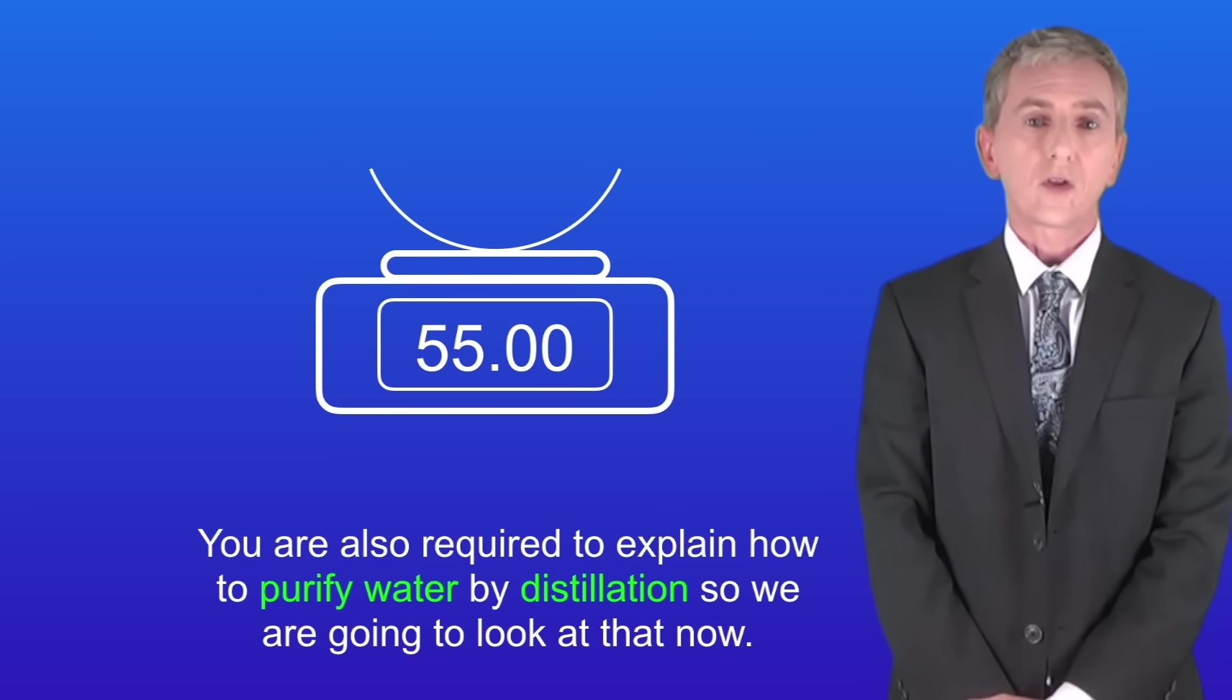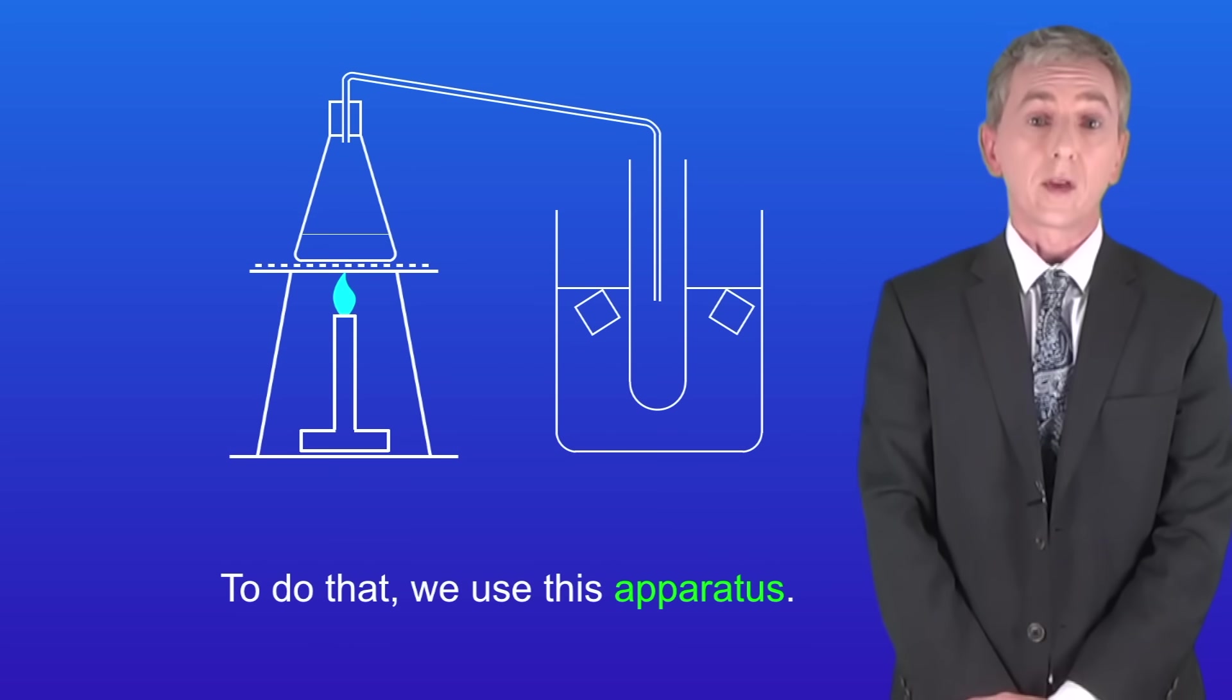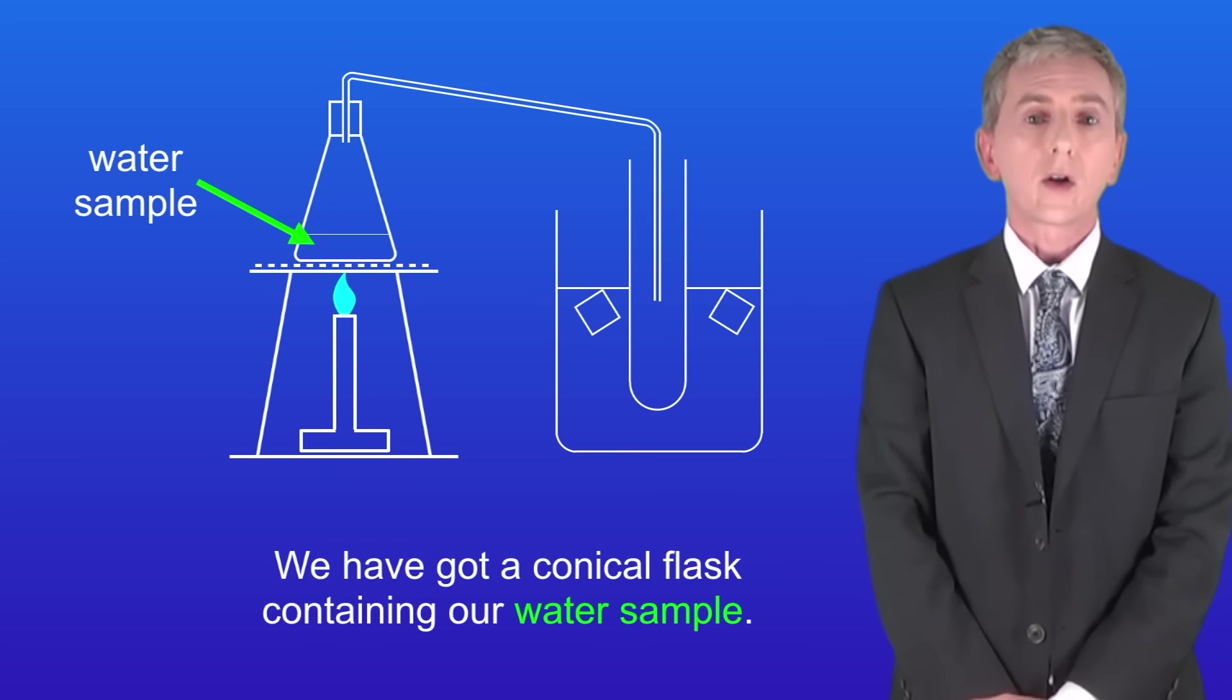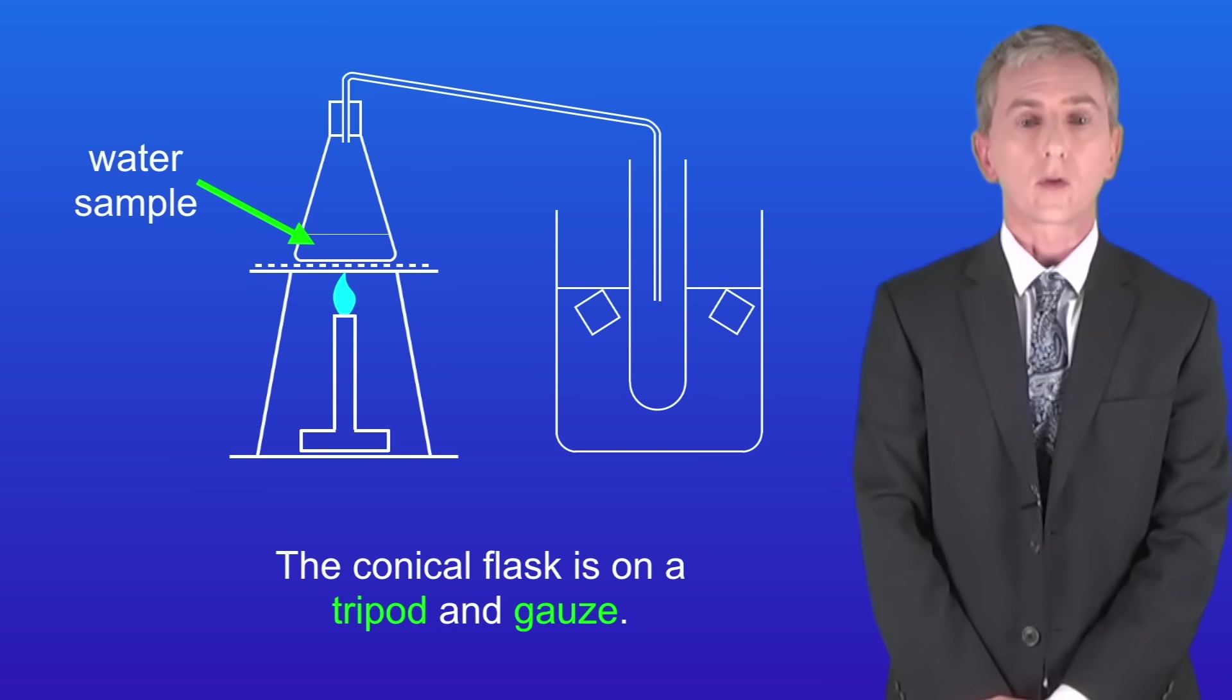Now you're also required to explain how to purify water by distillation so we're going to look at that now. To do that we use this apparatus. We've got a conical flask containing our water sample and the conical flask is on a tripod and gauze. The top of the conical flask has a delivery tube and this is pointed into a test tube.